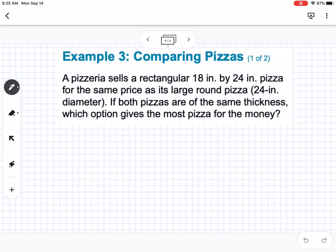Okay, here's our next example. So we are comparing pizzas. A pizzeria sells a rectangular 18 by 24 inch pizza for the same price as its large round pizza. If both pizzas are the same thickness, which option gives the most pizza for the money?